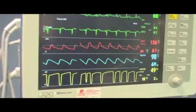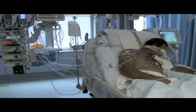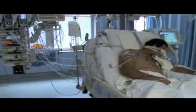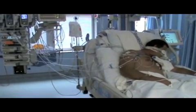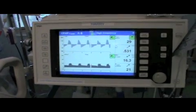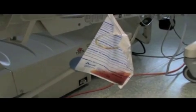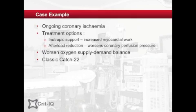Improving coronary perfusion can be achieved by increasing diastolic pressure. However, this is complicated by increasing afterload, which increases myocardial workload and oxygen consumption. This case illustrates the classic catch-22 of cardiogenic shock: how do you reduce afterload for the left ventricle without compromising coronary perfusion further? The answer to this conundrum is the intra-aortic balloon pump.